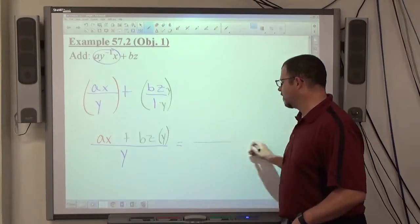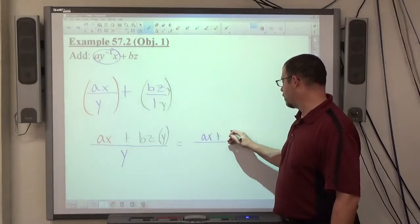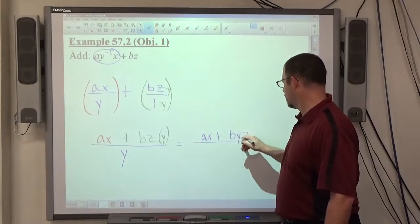And then again, what's left to do is to make it as simple as possible. A, X is fine. B, Z, Y. I'd probably go B, Y, Z. All over Y.